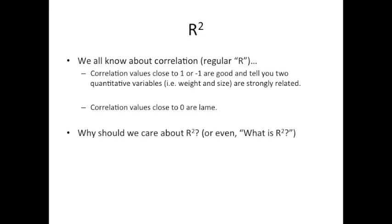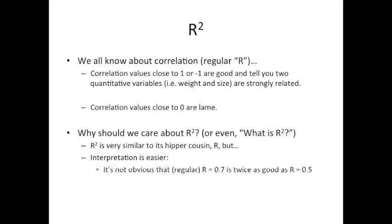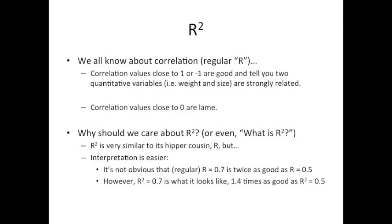Some of you may be asking, why should we care about R-squared? We already have regular R. Some of you might just be asking, what is R-squared? R-squared is very similar to its hipper cousin R, but interpretation is easier. For example, it's not obvious that when R equals 0.7, that's twice as good a correlation as when R equals 0.5. However, R-squared equals 0.7 is what it looks like — it's 1.4 times as good as R-squared equals 0.5.